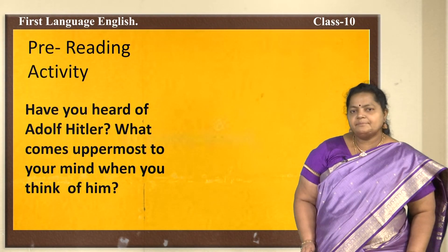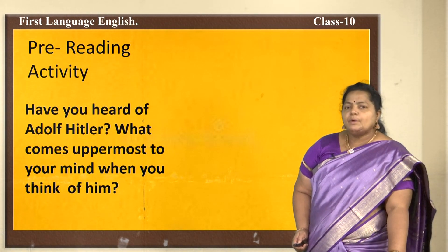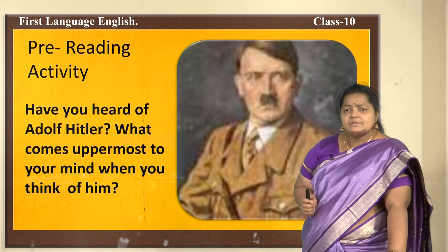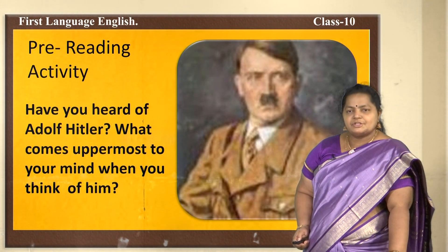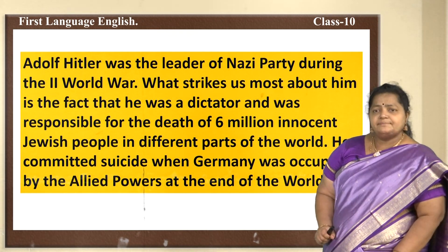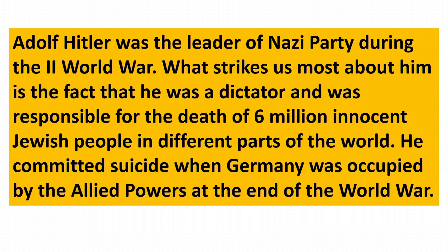Pre-reading activity: Have you heard of Adolf Hitler? What comes uppermost to your mind when you think of him? Adolf Hitler was the leader of the Nazi Party. What strikes us most about him is the fact that he was a dictator and was responsible for the death of 6 million innocent Jewish people in different parts of the world.